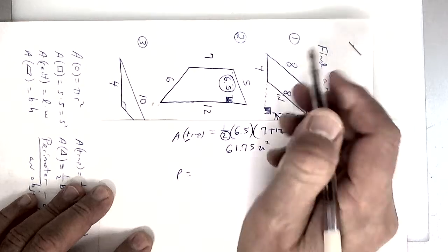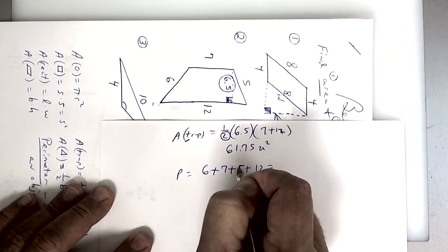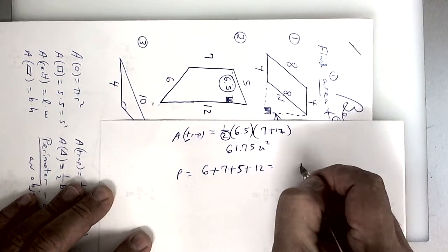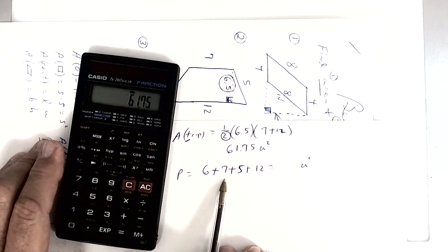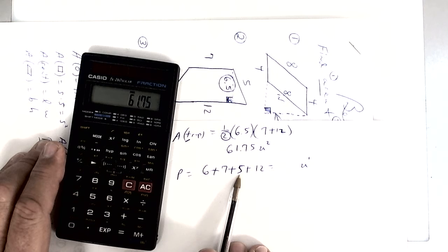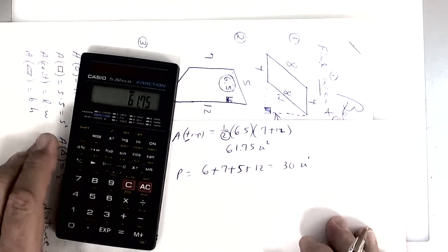So you're going to do 6, 7, and 5 plus 12 and whatever you get will be your perimeter and this would be in units to the first power. This right here is 13 and 5 is 18 and 18 and 12 is going to give you 30 I think that is.